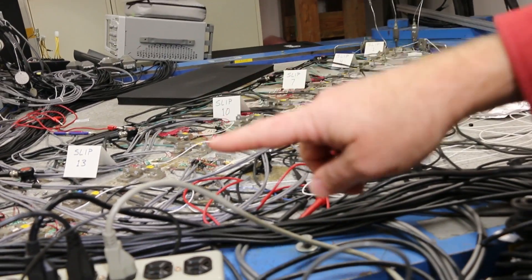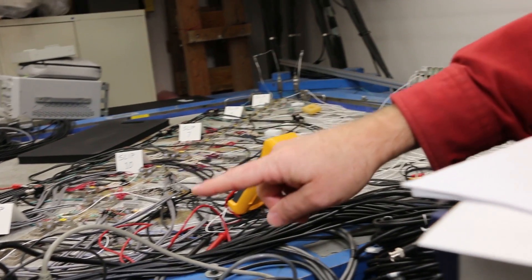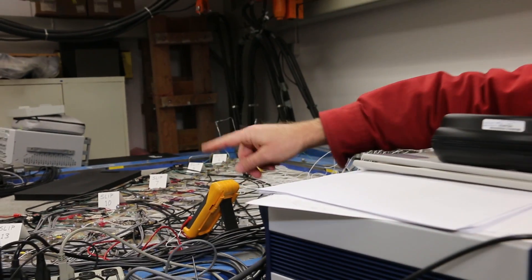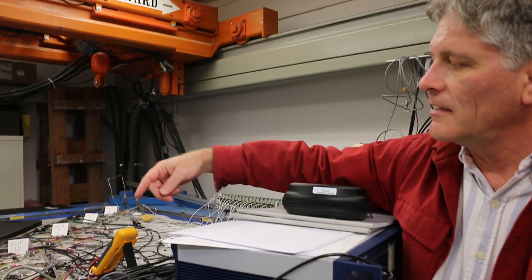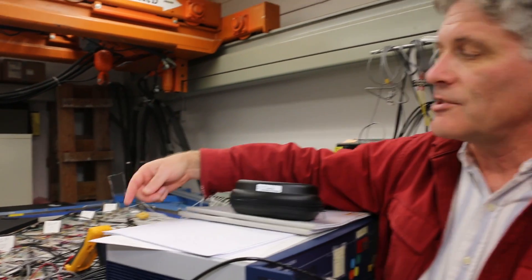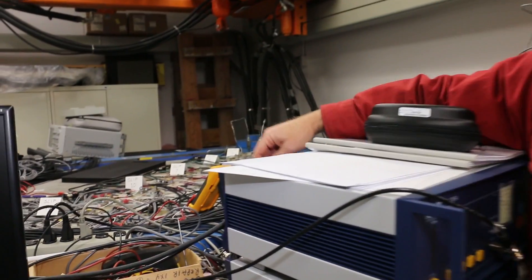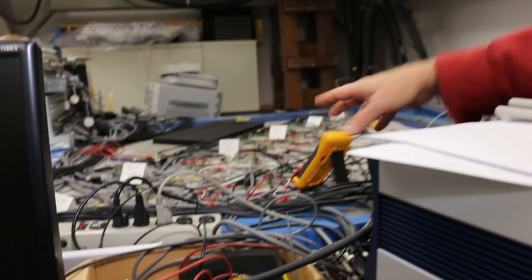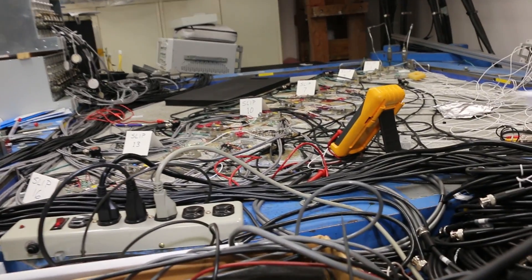Some of the sensors are labeled slip 16, 13, 10. Those are position sensors that measure slip across the fault all along the fault. I have strain gauges that measure shear strain all along the fault. And I have some accelerometers and piezoelectric sensors that measure acoustic emissions too.